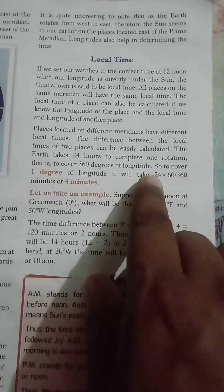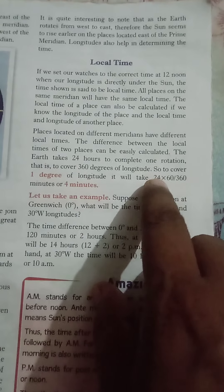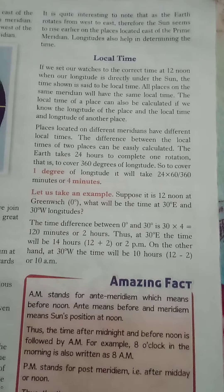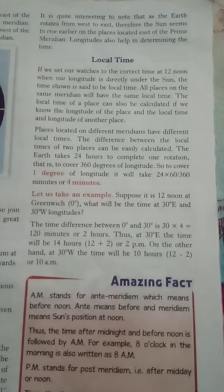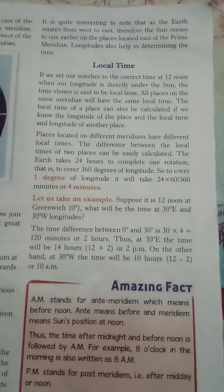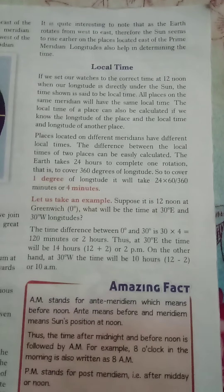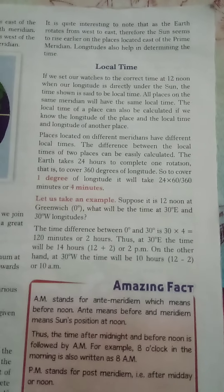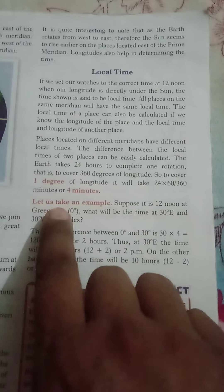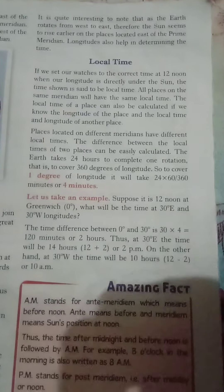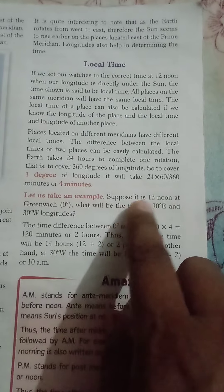For one degree of longitude, it will take 24 multiplied by 60 divided by 360, which equals 4 minutes. So 1 degree of longitude is covered in 4 minutes. This means the difference between 0 degrees and 1 degree longitude is 4 minutes.